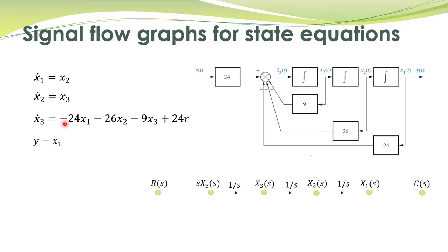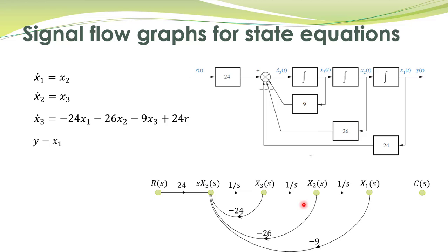Then this signal is x3, and this is x3 dot. We see that x3 dot equals minus 24 x1, minus 26 x2, minus 9 x3, plus 24. In signal flow graph notation, the outgoing signal is the sum of all incoming signals. Since we cannot write a minus sign on the node, the negative signs are appended to the branch gains. Note: x1 is multiplied by minus 24, so it must be minus 24, and x3 is multiplied by minus 9, so minus 9 should be here.